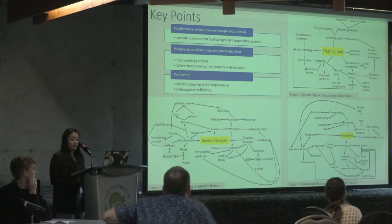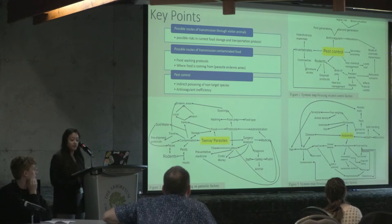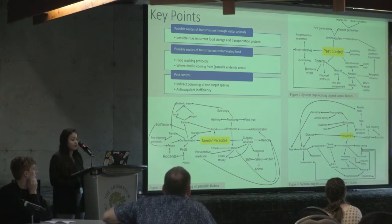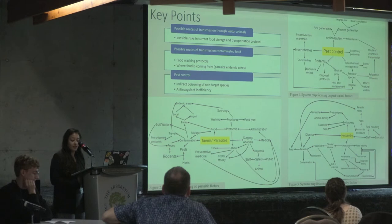We found some possible routes of transmission through visitor animals, which include wild and peri-domestic animals such as rodents and birds that are able to enter the lemur enclosure. These animals can carry pathogens into the enclosures through feces, which can then be transmitted to the lemurs and potentially to their human keepers. We also found possible risks in current food storage and transportation protocols, as there is additional risk of visitor animals accessing storage locations.